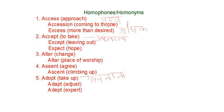The first pair of homophones are: access, accession, and excess. Access means approach. Accession means coming to the throne. Excess means more than desired.